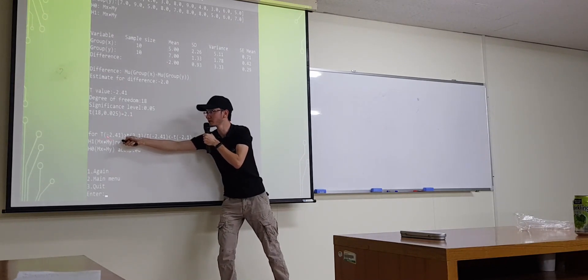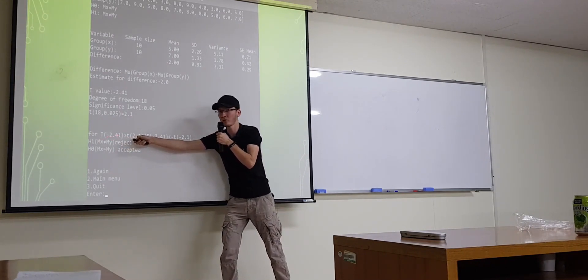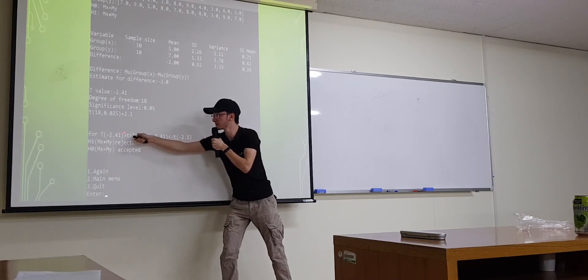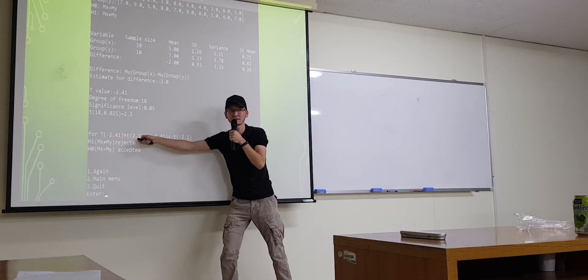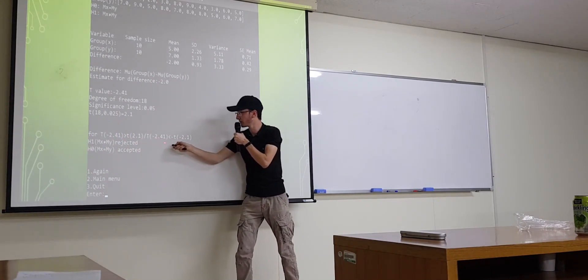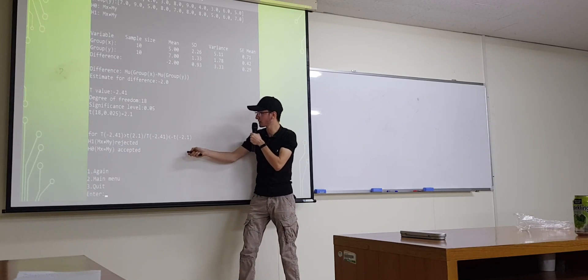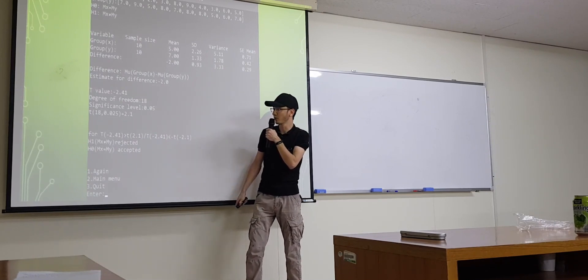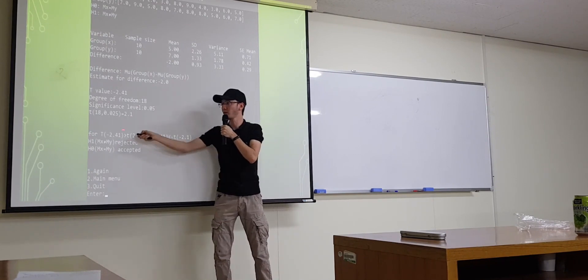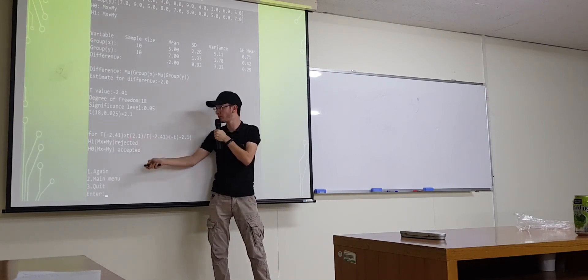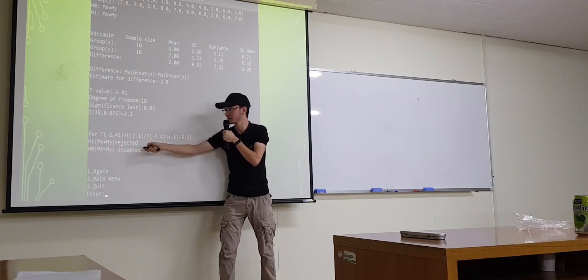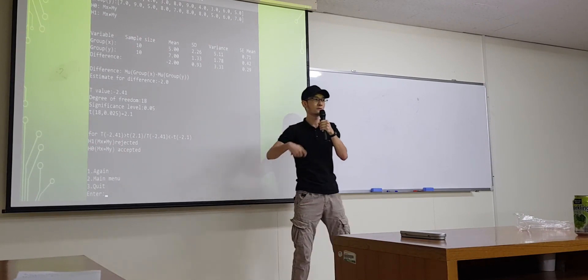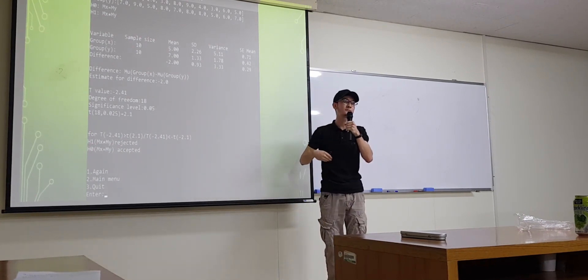And we are just checking the condition. Our t-value is minus 2.41. Greater than t-critical 2.1. This is not true. This is false. However, here, this is what? True or not? True. This is true. However, we have two tails here. Therefore, our alternative hypothesis rejected and null hypothesis accepted. Our program check it and displays it.